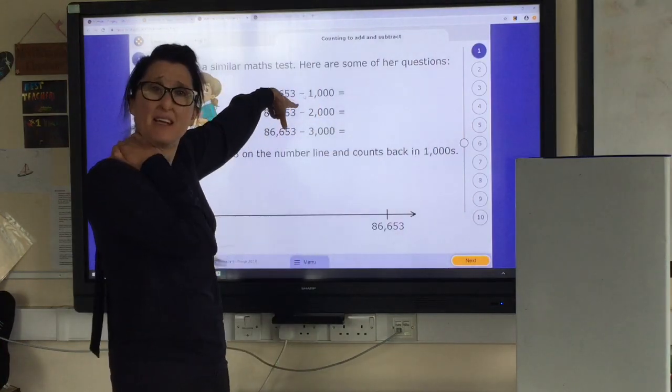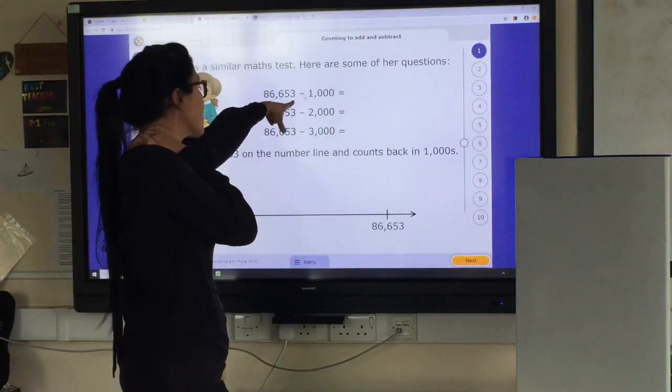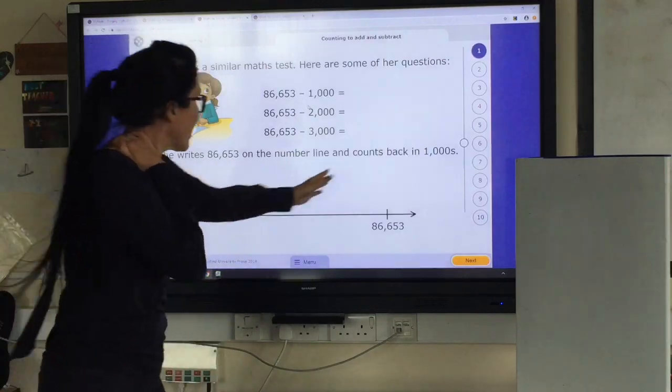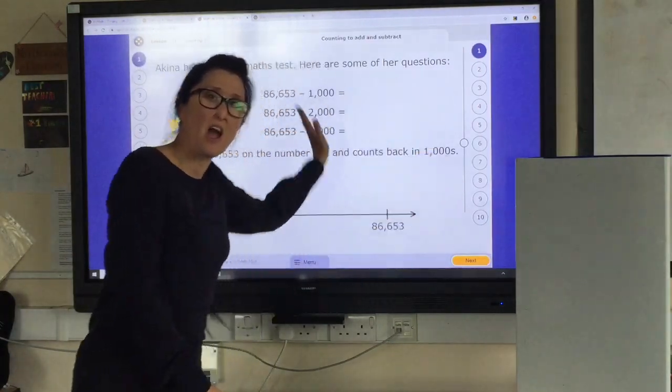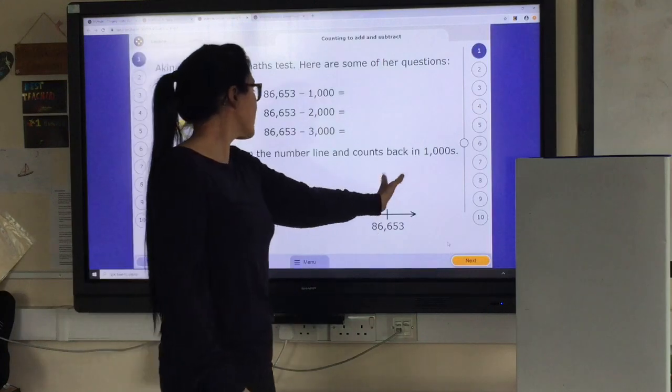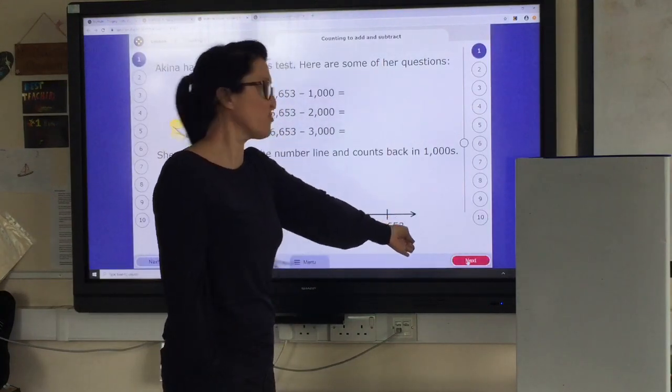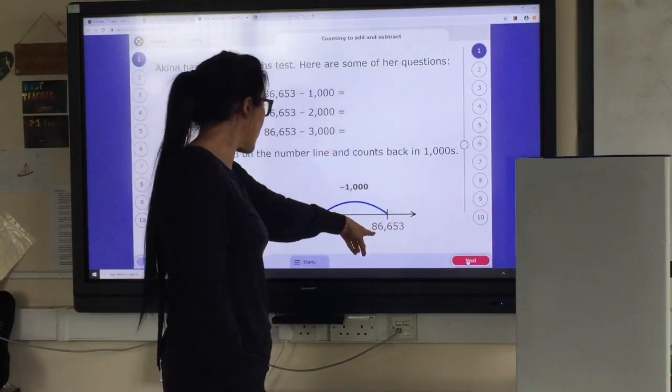So be really, really careful. I nearly missed my operation. We're subtracting, we're not adding. So that's why I've gone to this end of the number line and I'm working backwards because I'm subtracting. So I'm starting at 86,653. Subtract a thousand.